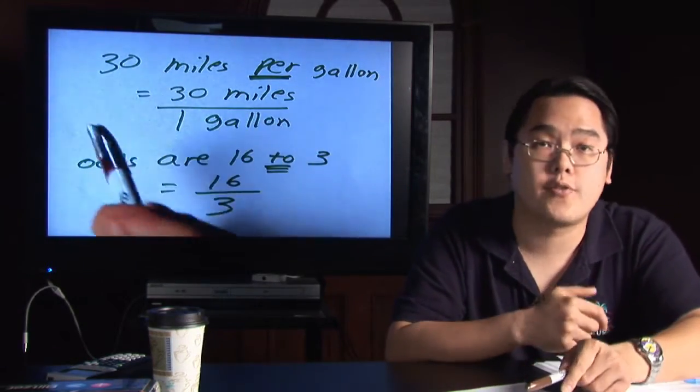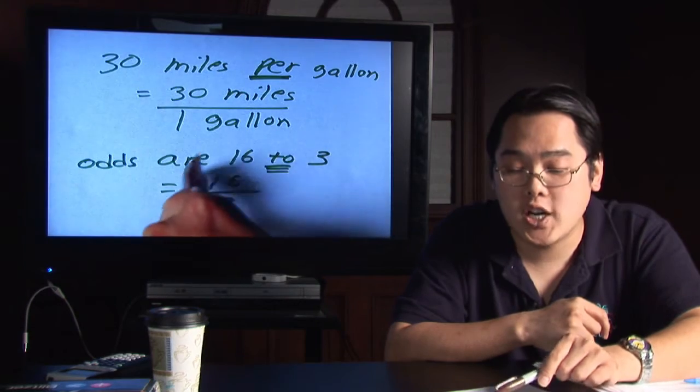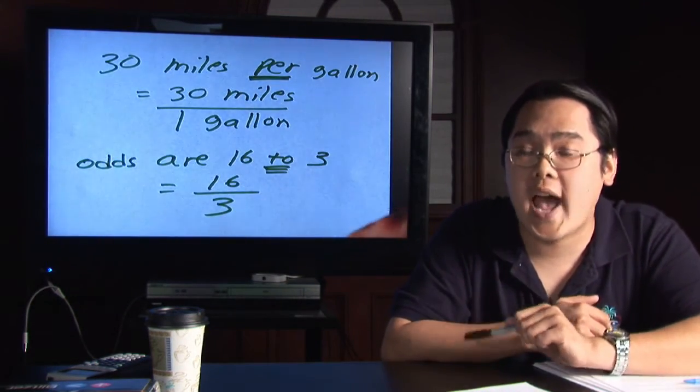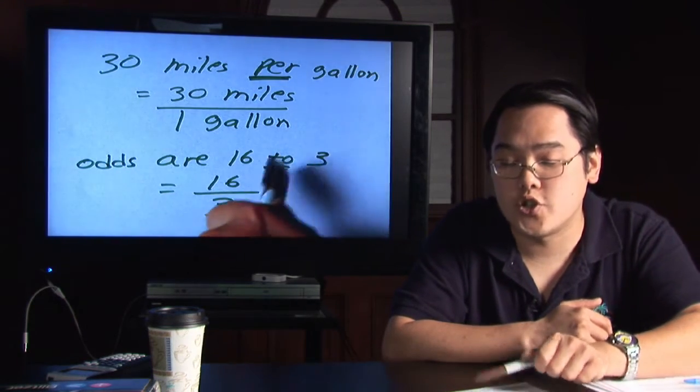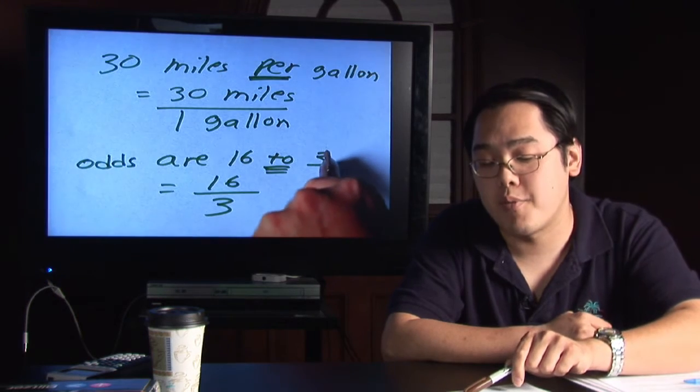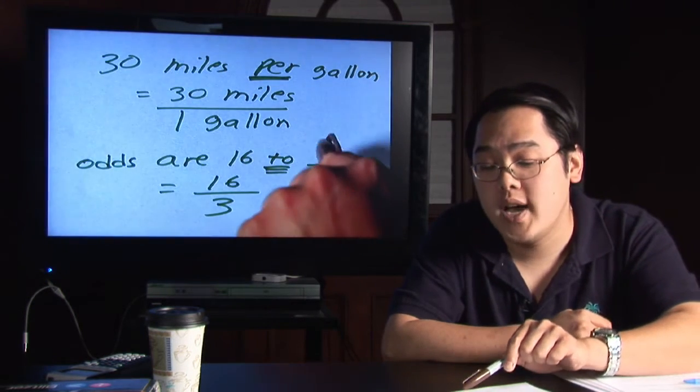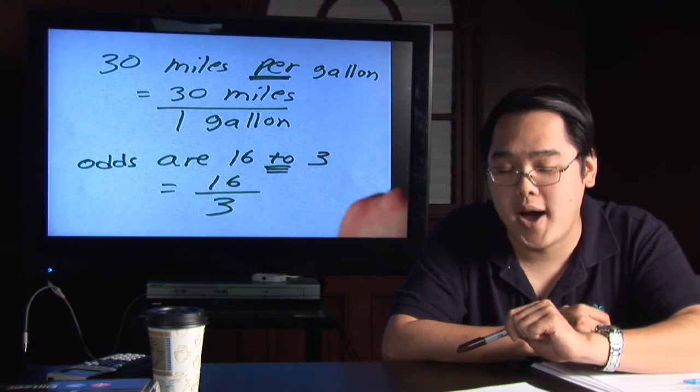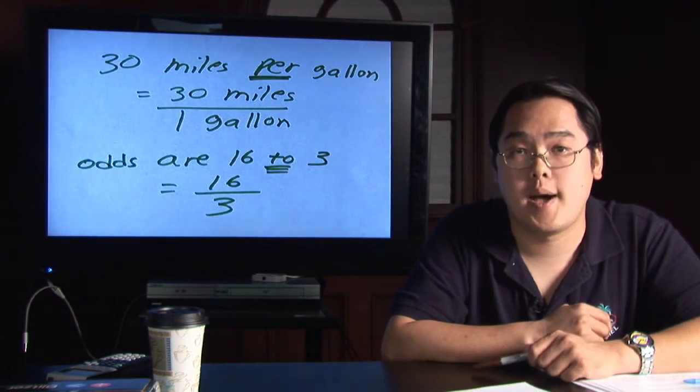When you see the phrase, for example, the odds are 16 to 3, again, the number or words after the word to tells you immediately what goes in the denominator. Because the number three is after the word to, that tells you three belongs at the bottom. That makes the 16 go on top.